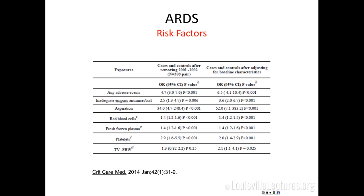Transfusion of blood products also matters: red blood cells increase the risk by 40%, plasma increases risk by 40%, and platelets increase the risk by 2%. Tidal volume is also significant — every 1 cc per kilo of ideal body weight increase in tidal volume will double your risk of developing ARDS in patients who do not yet have it. The bottom line is to avoid blood products, ventilate every patient with low tidal volume, avoid aspiration where possible, and choose antibiotics carefully — all of these will impact the development of ARDS.